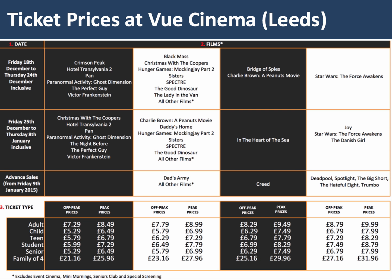Cinemas engage in price discrimination all the time. Here's a price list from the Vue cinema in Leeds. You can see peak and off-peak prices, different prices for families, and some films are more expensive than others — that depends in part on the price that the distributors want to charge. And of course there's a ticketing system whereby you can prevent resale. So cinemas use price discrimination regularly.